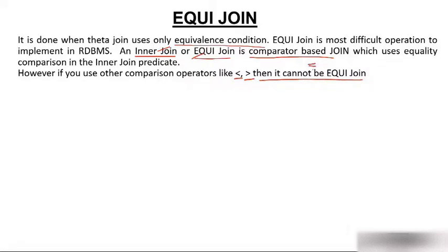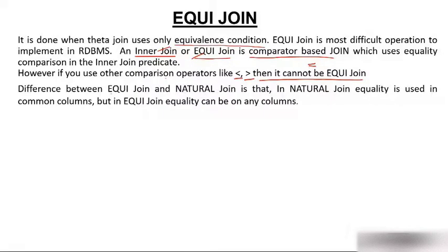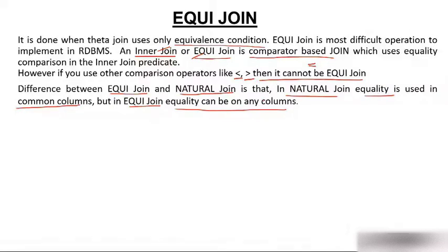You must be thinking: if we talk about natural join, we did the same — there was also an equality condition. So what is the difference between Equijoin and natural join? The difference is that in natural join, equality is used on a common column — you must have at least one common column in both tables. But in Equijoin, equality can be on any column. That is the main difference.